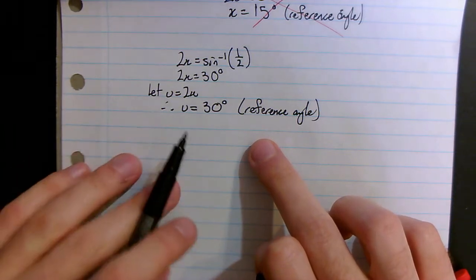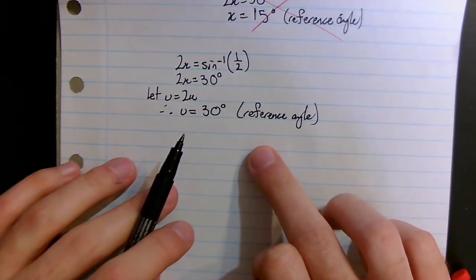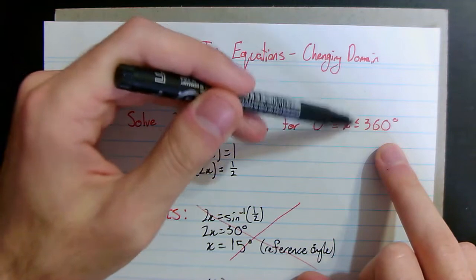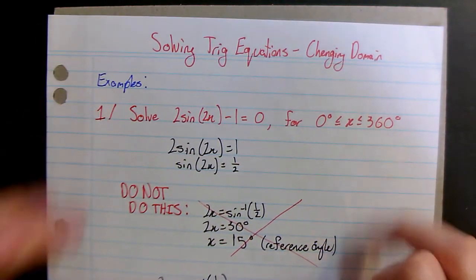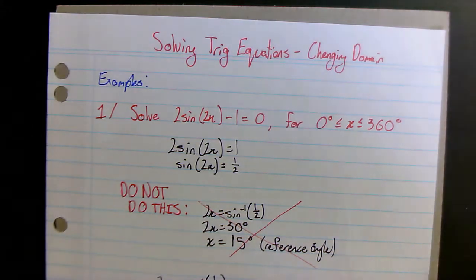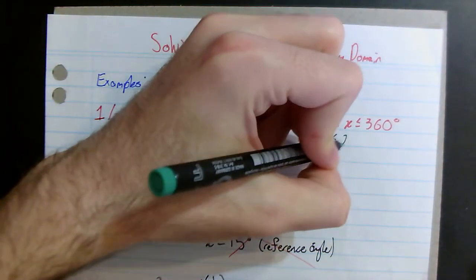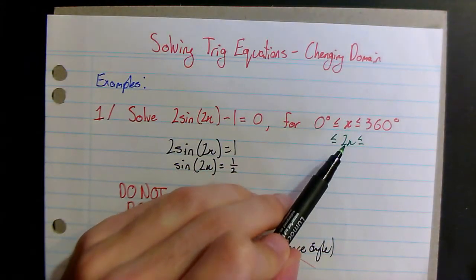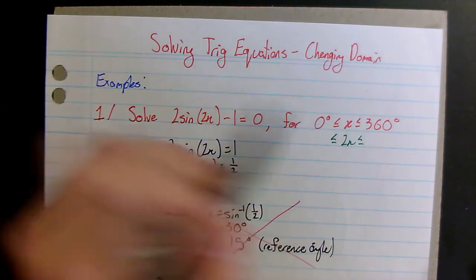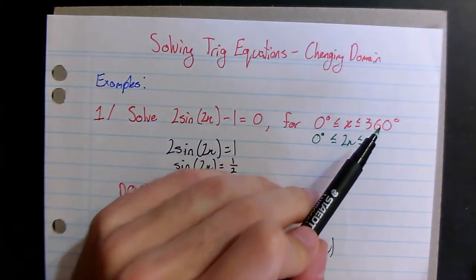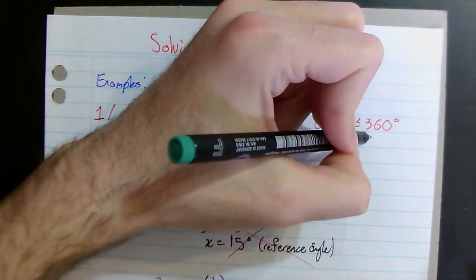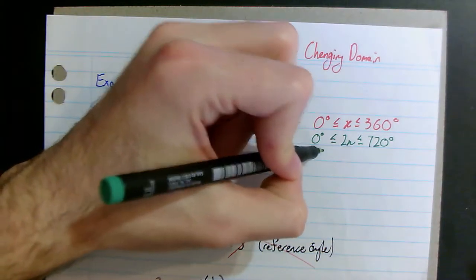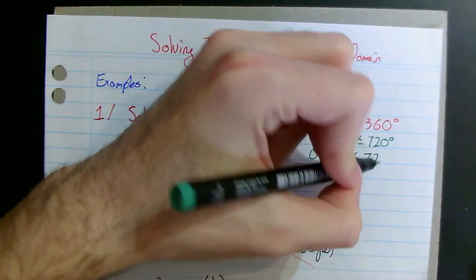Now we have to be careful with how we define our domain. The domain is currently from 0 to 360 and that's for x, but we want it for u which is 2x. So we multiply both bounds by 2: 0 times 2 is 0 degrees, and 360 times 2 is 720 degrees. Since u = 2x, our domain for u is from 0 to 720 degrees.